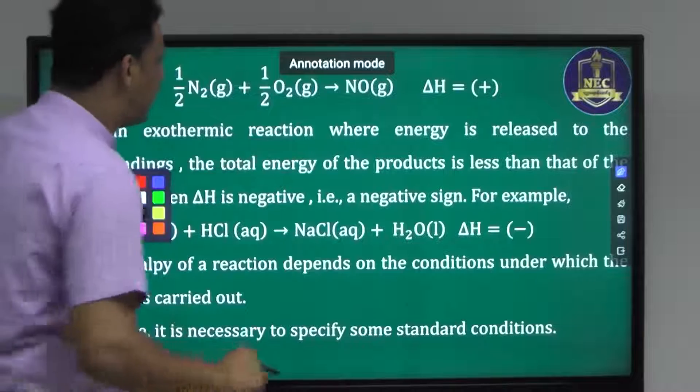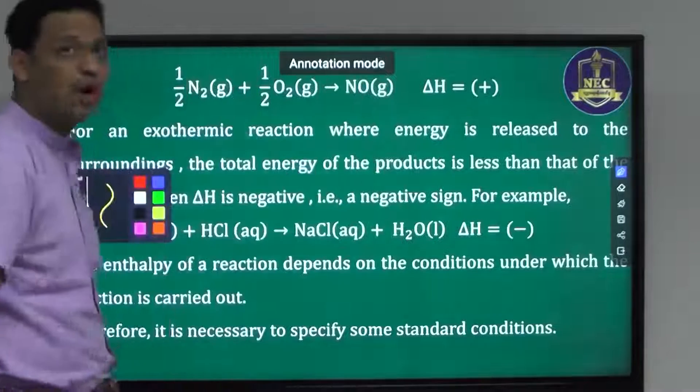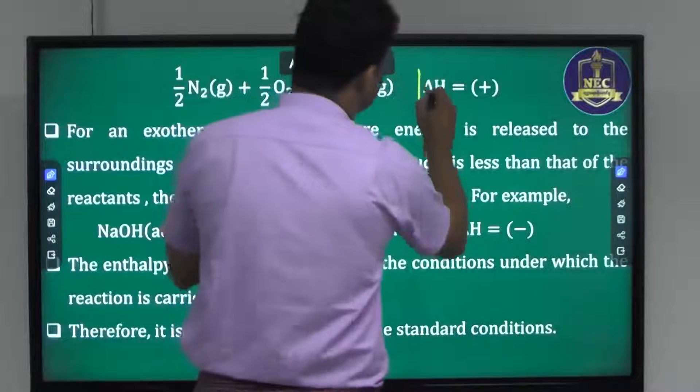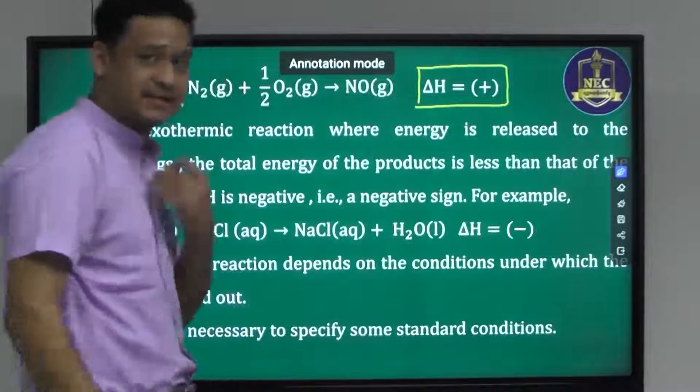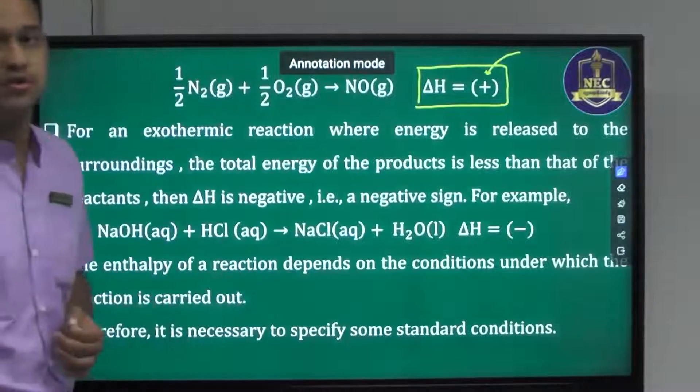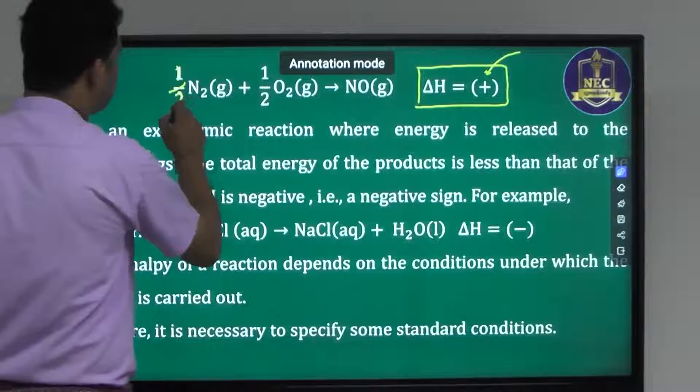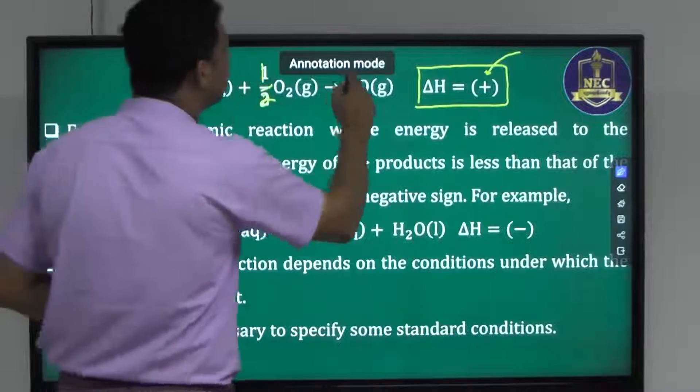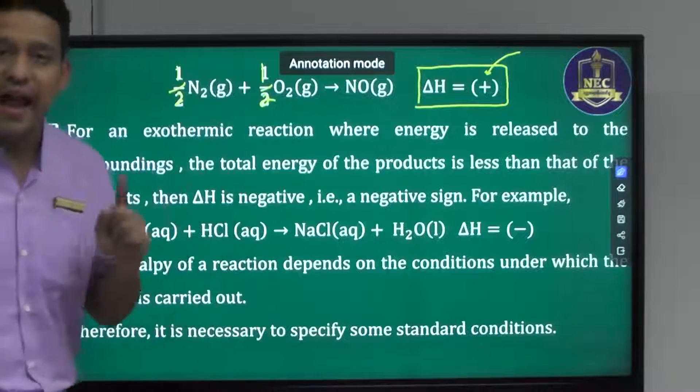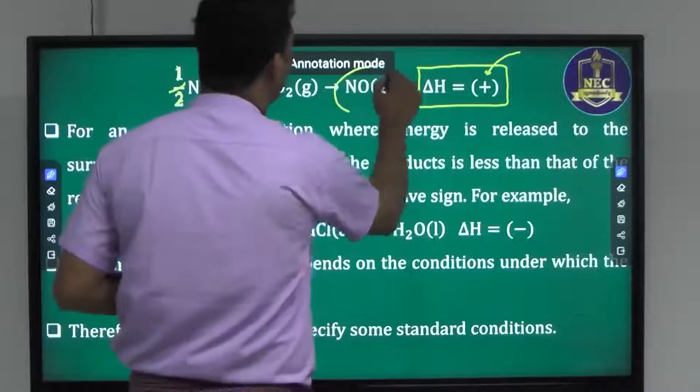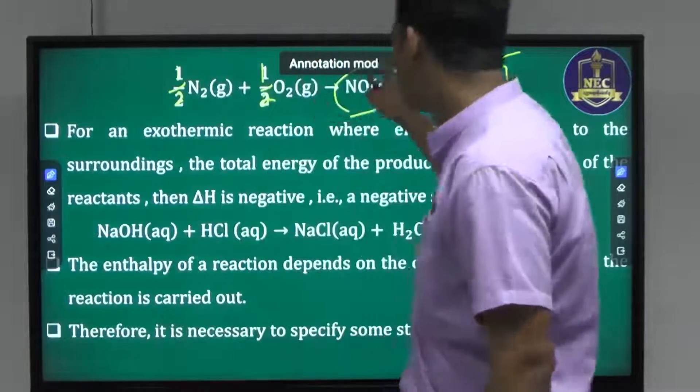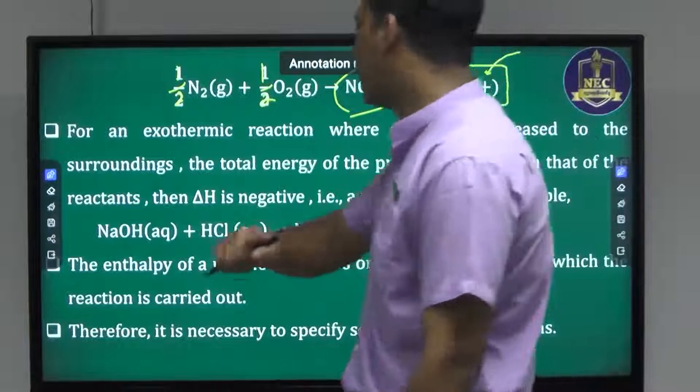Nitrogen plus oxygen gives nitrogen oxide. This is an endothermic reaction. Endothermic reaction is equal to positive sign. Now we have an endothermic reaction.